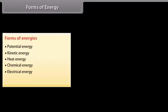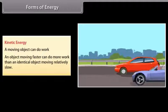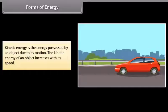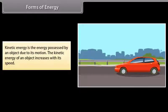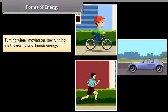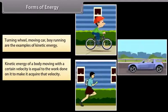There are many different forms of energy: potential energy, kinetic energy, heat energy, chemical energy, electrical energy, and light energy. A moving object can do work, and an object moving faster can do more work than an identical object moving slowly. Kinetic energy is the energy possessed by an object due to its motion, and it increases with speed. Examples include a turning wheel, a moving car, and a boy running. The kinetic energy of a body moving with a certain velocity is equal to the work done on it to acquire that velocity.